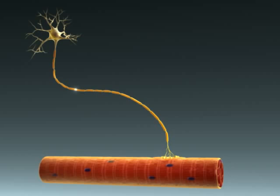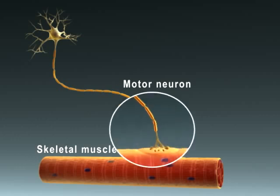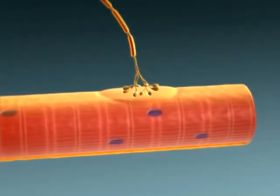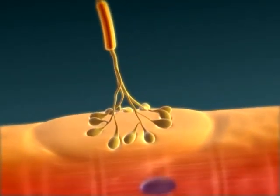An action potential propagates down a motor neuron to a skeletal muscle fiber. The site where a motor neuron excites a skeletal muscle fiber is called the neuromuscular junction.